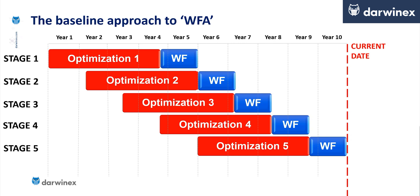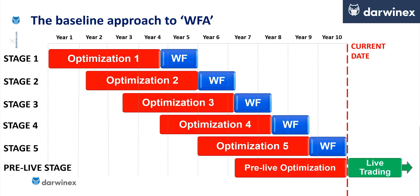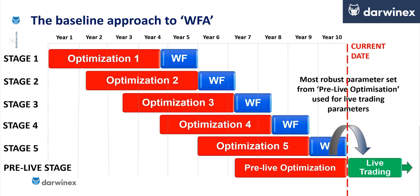The whole purpose of this is to produce parameter values that are going to be the most effective for the current market conditions — one of the major advantages of walk-forward analysis above and beyond a standard optimisation process. The final optimisation that takes us right up to the current date is sometimes called a pre-live optimisation, and this produces the parameter values that get passed forward into our live trading account. So now that we understand the baseline approach, let's look at some of the alternatives that can cause massive issues with the walk-forward analysis technique.